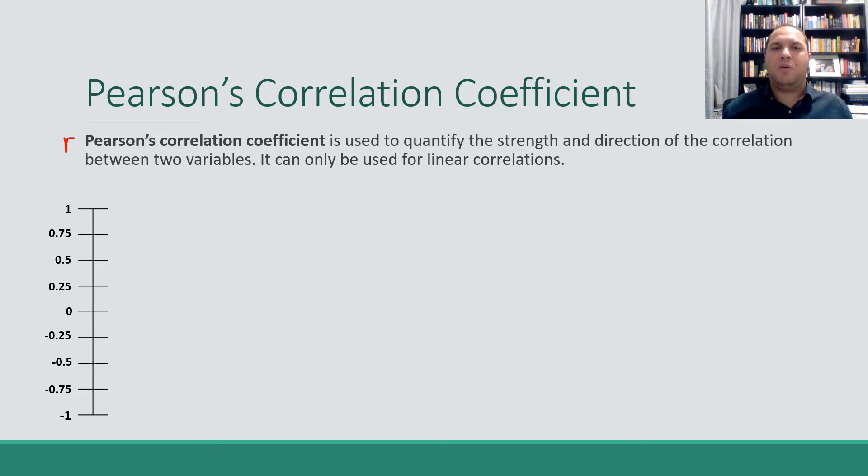Now it's used to quantify the strength and direction of the correlation between two variables. So what we're talking about here is strength and direction. And when it says quantify, we're basically getting a number that tells us the strength and the direction. Now key thing to note, it can only be used for linear correlations.